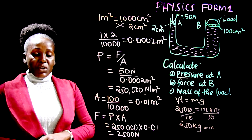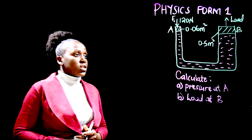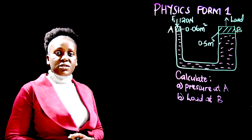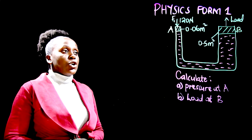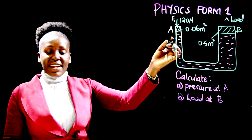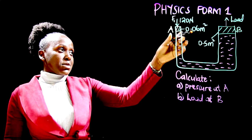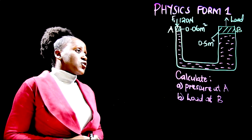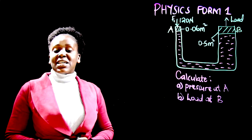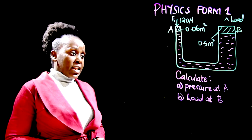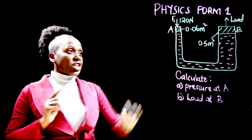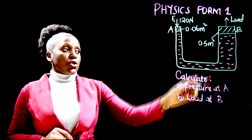Let us look at one more example. We have a sketch of a hydraulic lift with two sides. On the smaller piston, region A, we have 120 newtons applied on an area of 0.06 meters squared. On the bigger piston, region B, we have a load and an area of 0.5 meters squared. We are required to calculate two quantities: the pressure in A and the load at B.